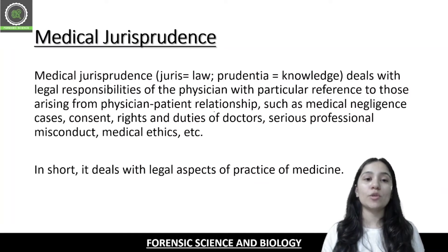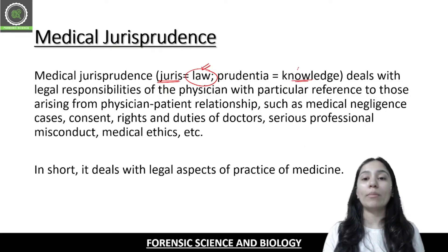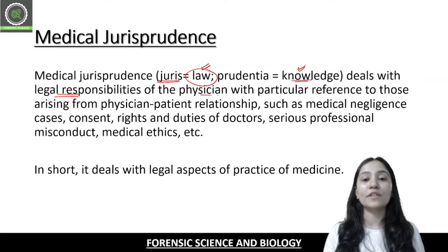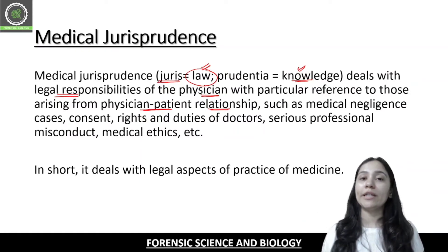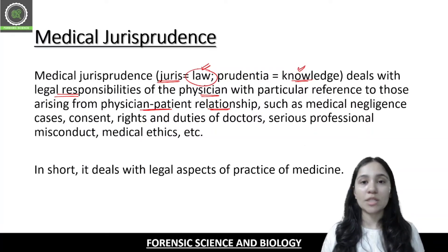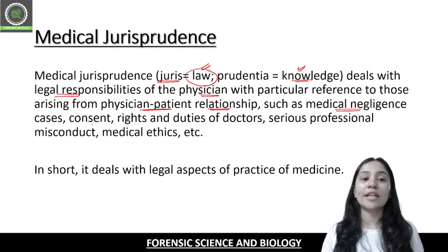Now, what is Medical Jurisprudence? 'Juris' is related to law and 'prudence' is knowledge. So when you apply knowledge of law in the field of medicine, it is called Medical Jurisprudence. It deals with the legal responsibility of a physician, with particular reference to those arising from the physician-patient relationship. For example, if I am a doctor, I have a legal responsibility towards my patients. All ethical norms and legal norms for a physician come under medical jurisprudence. Medical negligence, consent without authorization — these come under medical jurisprudence.